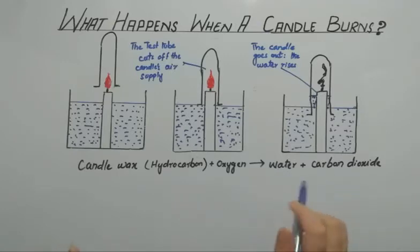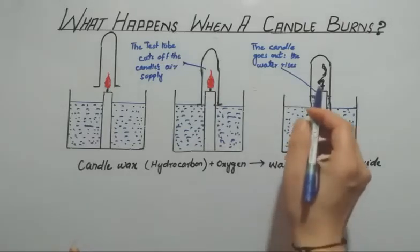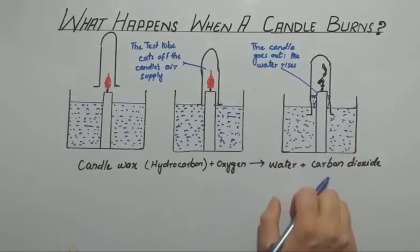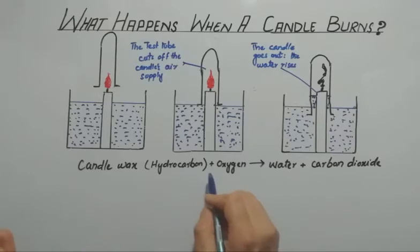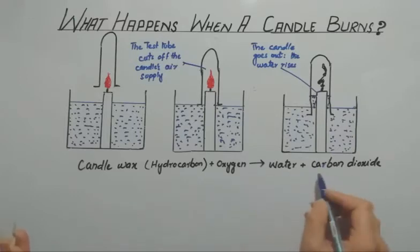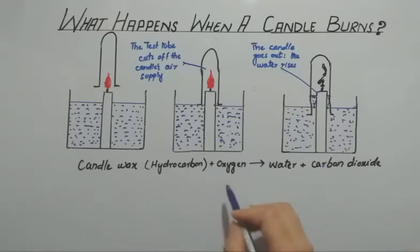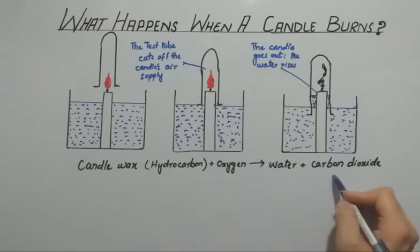Water was produced, so the water level rises. And carbon dioxide gas was produced. So oxygen was consumed and replaced by carbon dioxide gas.